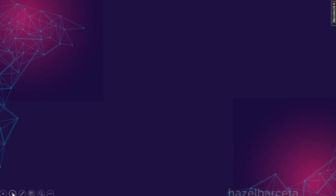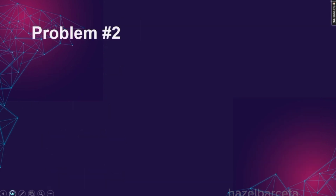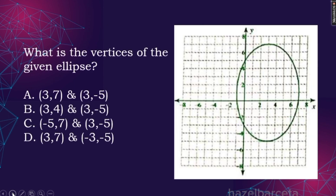This lesson is about the conic section ellipse. We have three problems: problem number one is what is the standard form of the given ellipse, problem number two is what is the center, and problem number three is what are the vertices. But before we proceed with these problems, let us first discuss the basic concepts of the conic section ellipse.